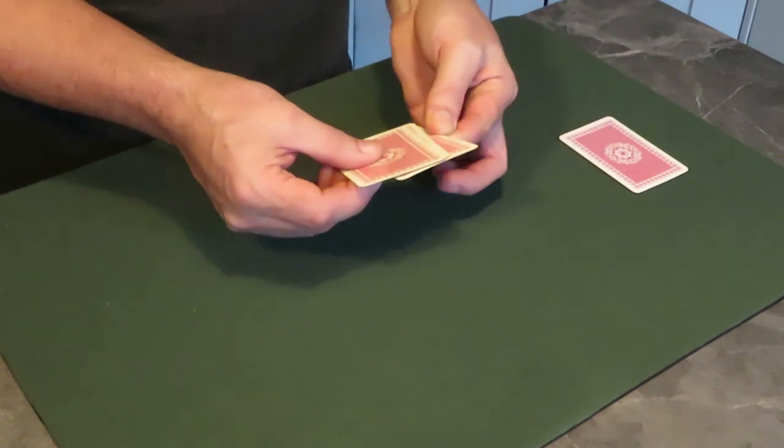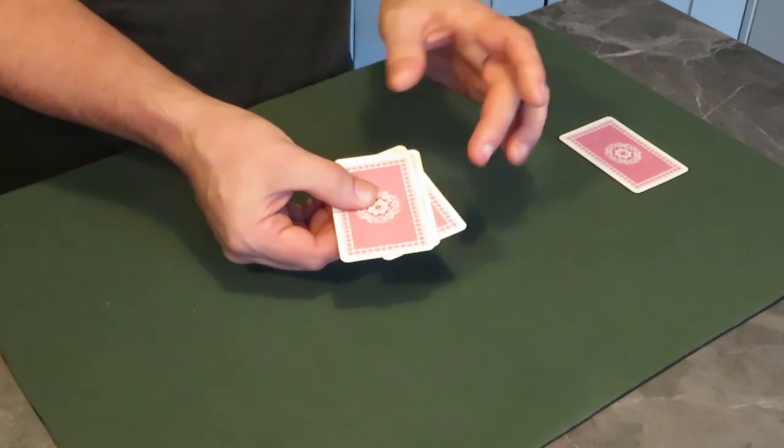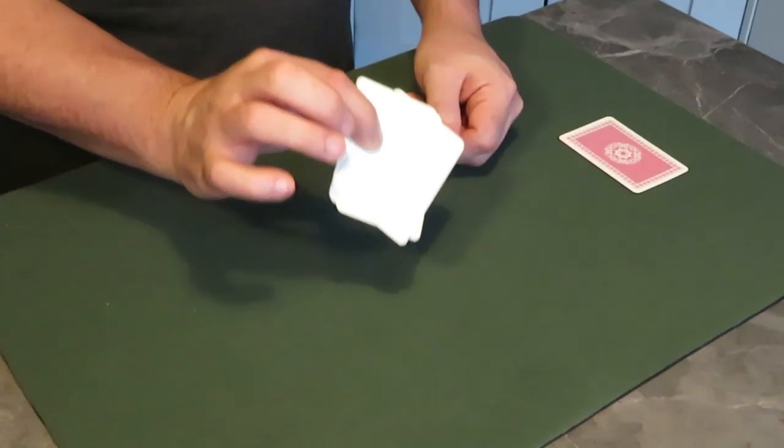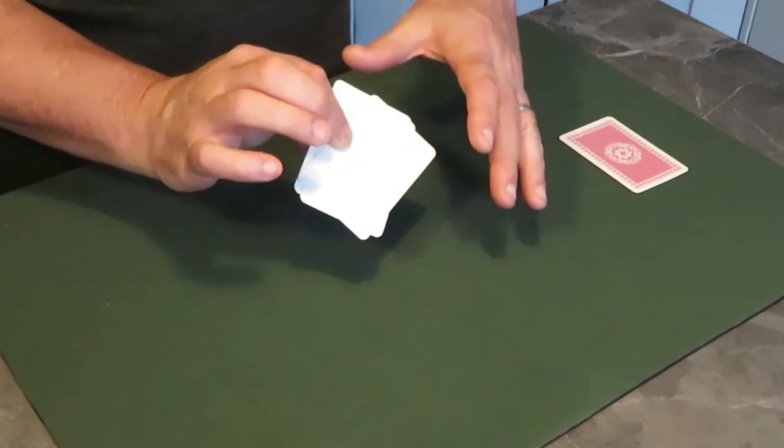That's that and you clip this underneath. Again don't keep them squared. So keep it a little bit haphazard as you turn this over. This all looks clean.